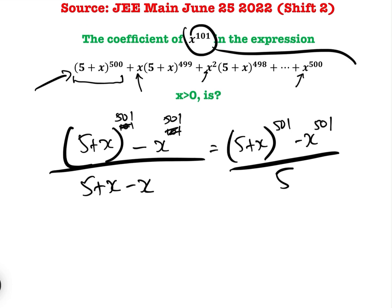So again we're going to use exactly the same formula, so that would be 501C101, 5 to the power of 400, times x to the power of 101, all over 5.